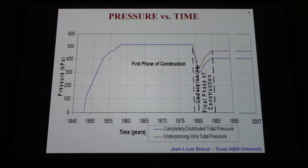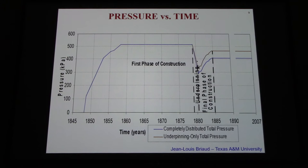The story about pressure is remarkably interesting. At the beginning of construction, with a small foundation and large load, the pressure in 1858 when the first phase was completed was around 500 kPa. It stayed there through the Civil War. Then Casey came in and enlarged the foundation — that increased the load but decreased the pressure. By decreasing the pressure significantly, he was able to complete construction of the column, finishing at a total pressure less than the pressure under the first phase.